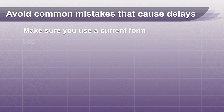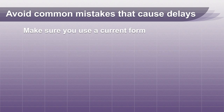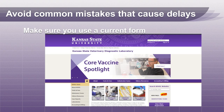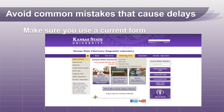Some of the common mistakes that cause delays in completing the FAVN test are easily avoided. Make sure you are using a current FAVN form. Submission forms and instructions are available at our rabies lab website under the submission forms tab.